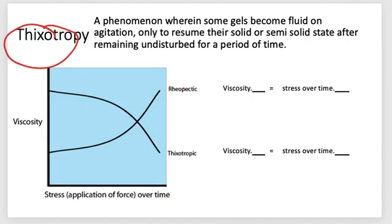Examples of gels that possess this thixotropic property include honey and ketchup. Also, in painting industries, the paint can thicken over time, and it is necessary to stir the paint in order to make it thinner and easier to manipulate. For thixotropic behavior, the viscosity decreases with stress over time.